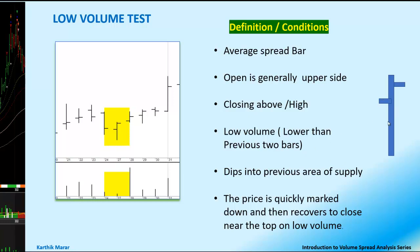It dips into the previous area of supply. The smart money opens the price and then quickly pushes it down on low volume. If supply is present and a large number of sellers are there, they will sell into this bar, volume will become high, prices will be pushed down, and it will close near the lows. But if there is no supply or very little supply, the volume remains low and the smart money can easily push the price back near the high — dipping into the supply area, testing for supply, and then bringing it back to the high.